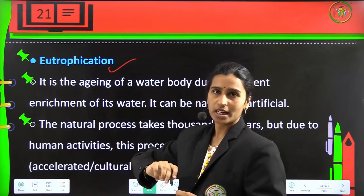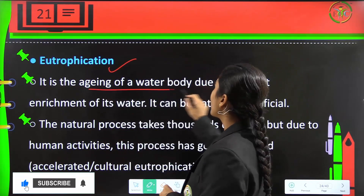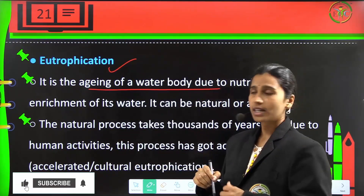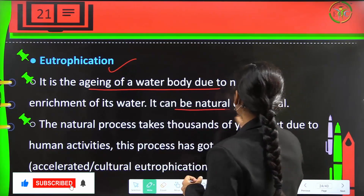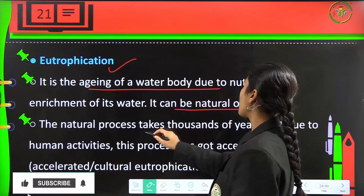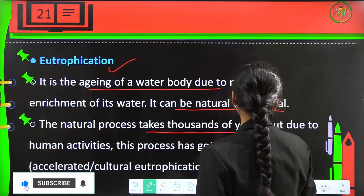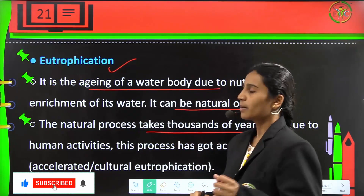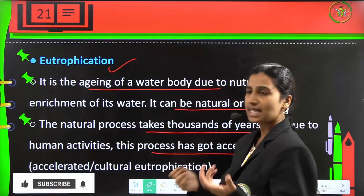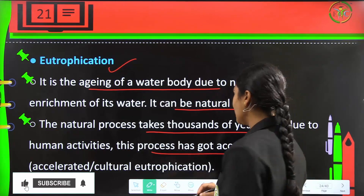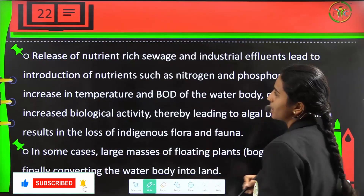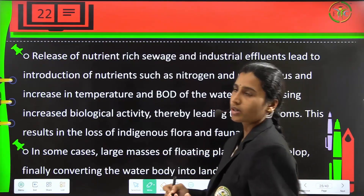Next is eutrophication, which is the aging of water bodies because of nutrient enrichment of its water. It can be natural or artificial. The natural process takes thousands of years, but because of human activities, this process has been accelerated, and cultural eutrophication has become more prevalent.